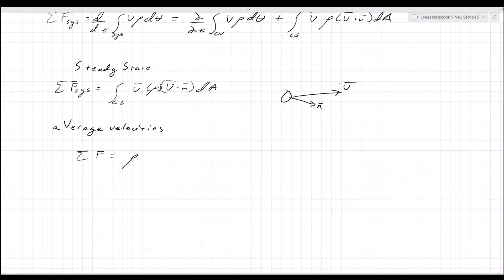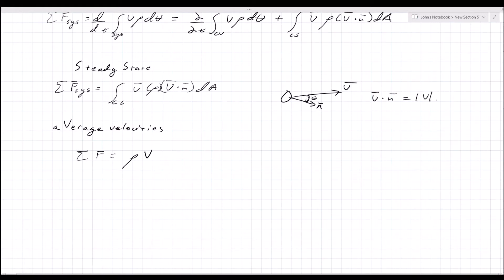If velocity is leaving the system at some angle, for it to leave you must deal with the component parallel to the normal vector, because any fluid perpendicular to the normal vector will just hit the top of the control volume and not leave the system. If this angle is theta, then v dot n — which by the dot product equals magnitude of v times magnitude of n times cosine theta — gives v cosine theta, since n is a unit normal vector. So v dot n equals v cosine theta.